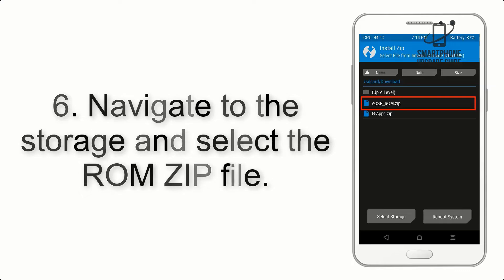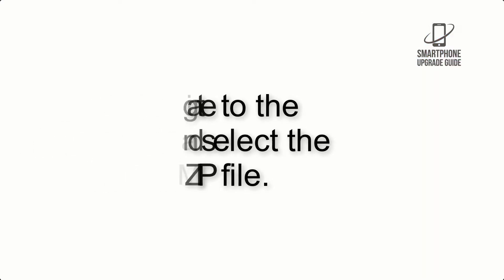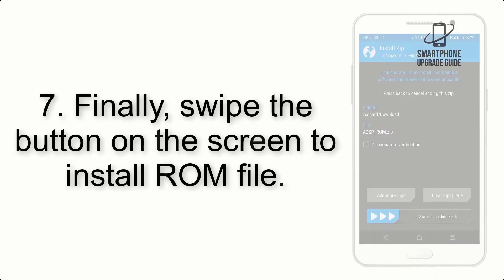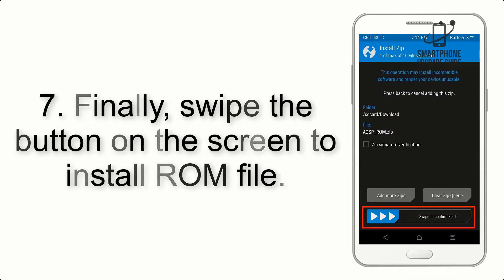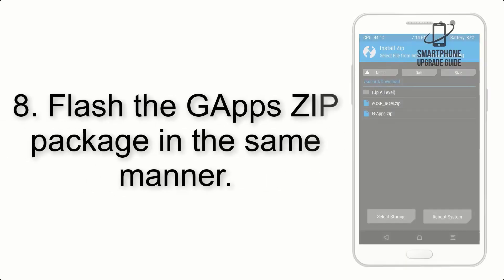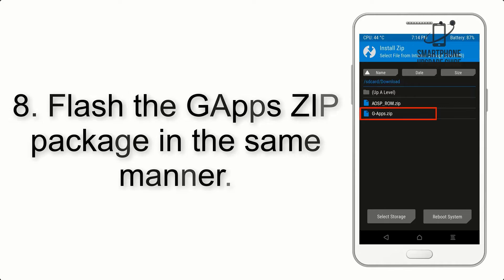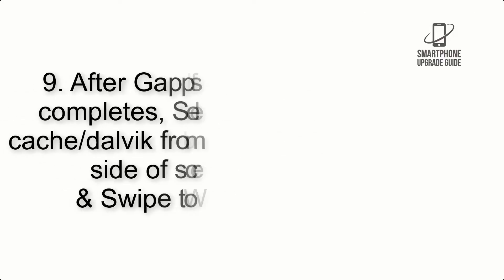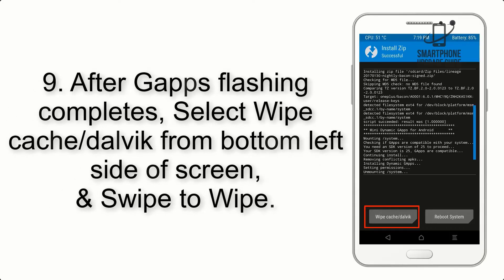Step 6: Navigate to the storage and select the ROM zip file. Step 7: Swipe the button on the screen to install the ROM file. Step 8: Flash the GApps zip package in the same manner.